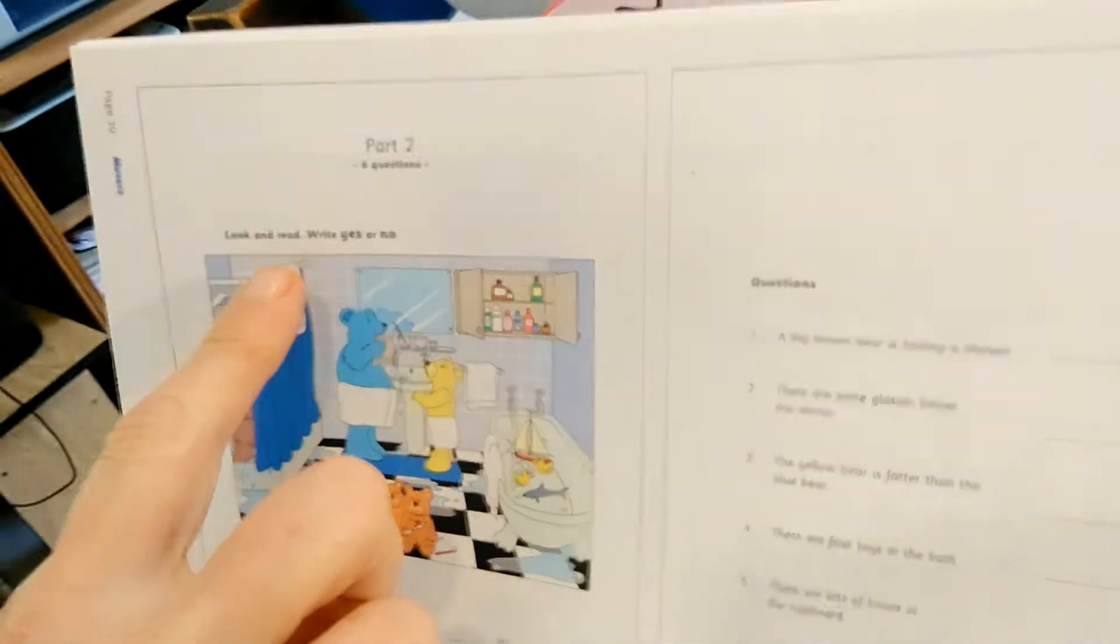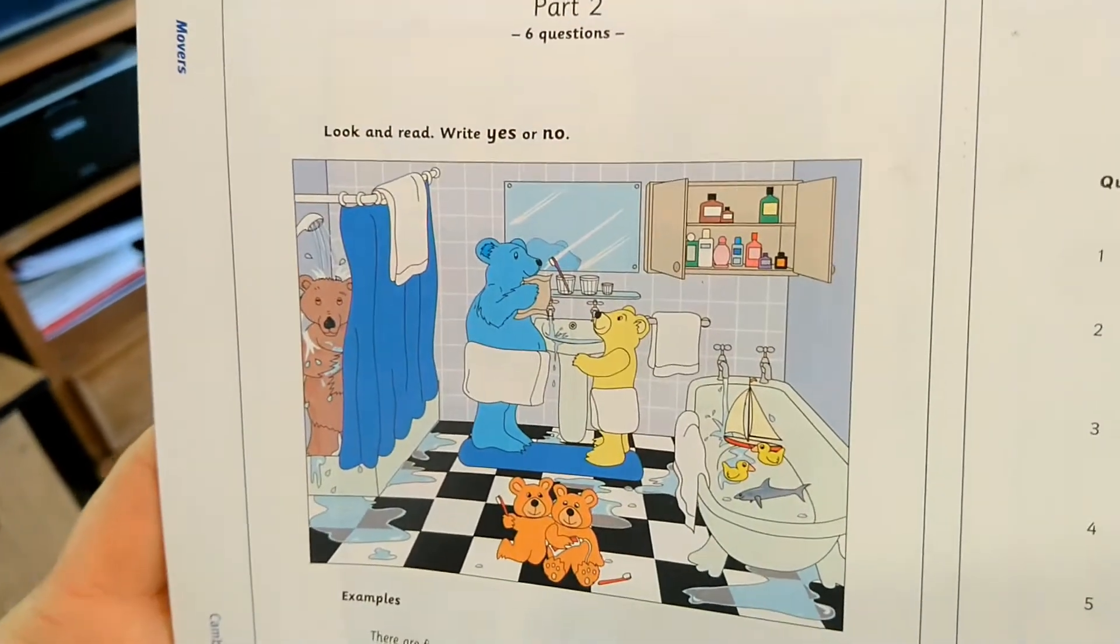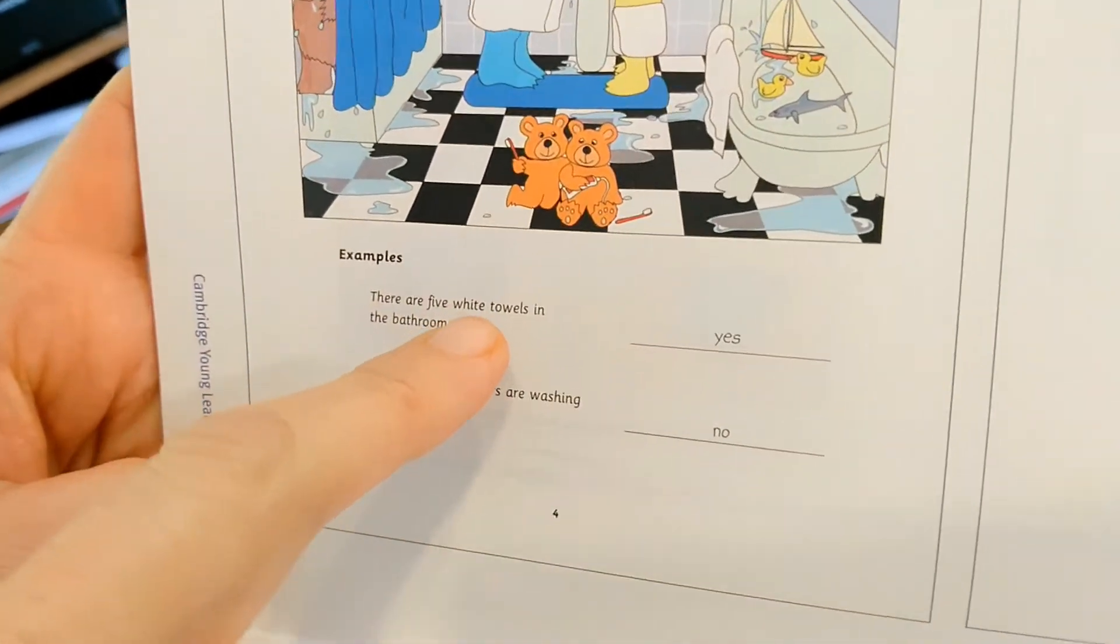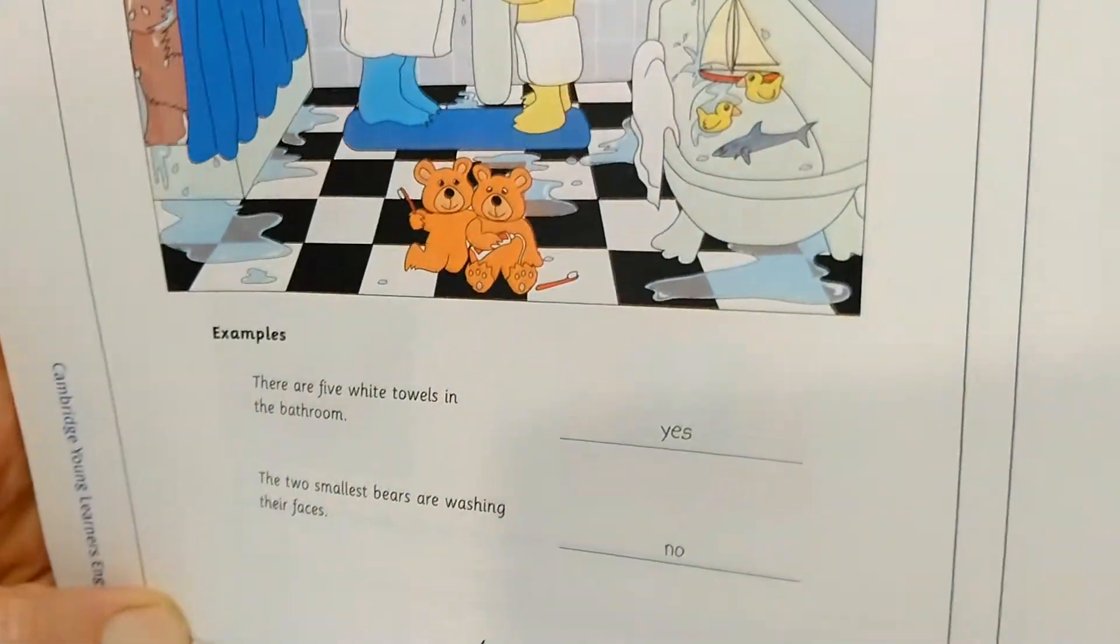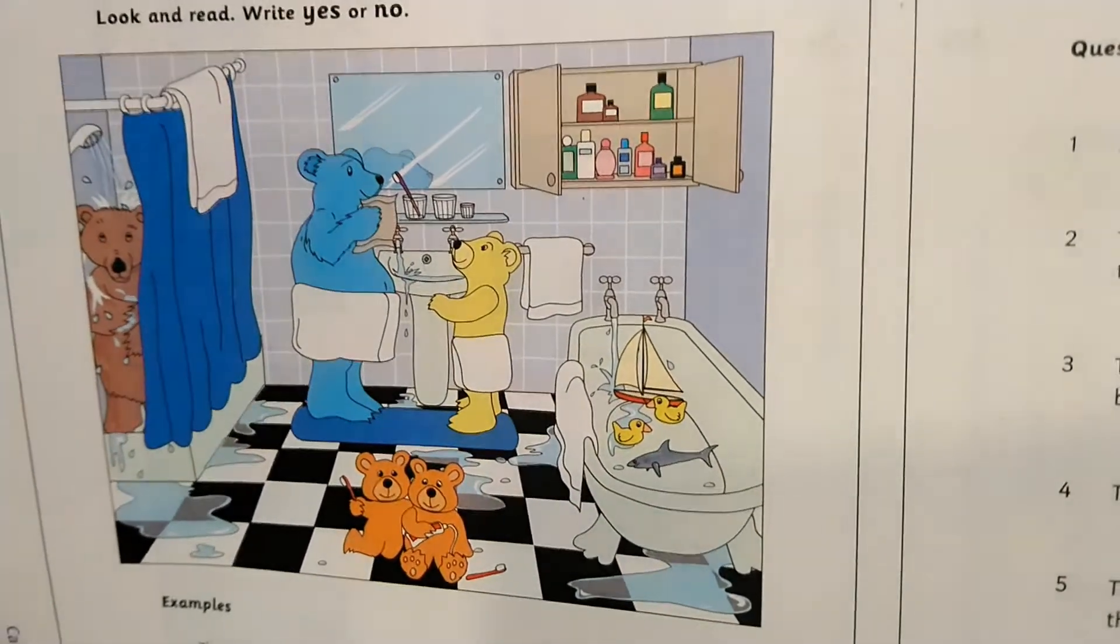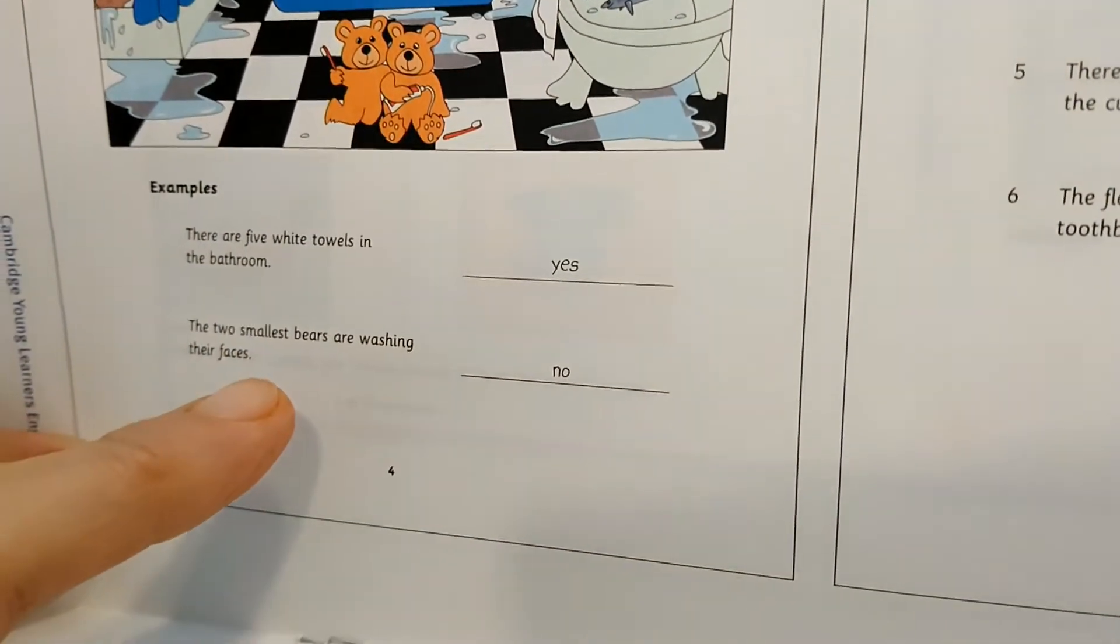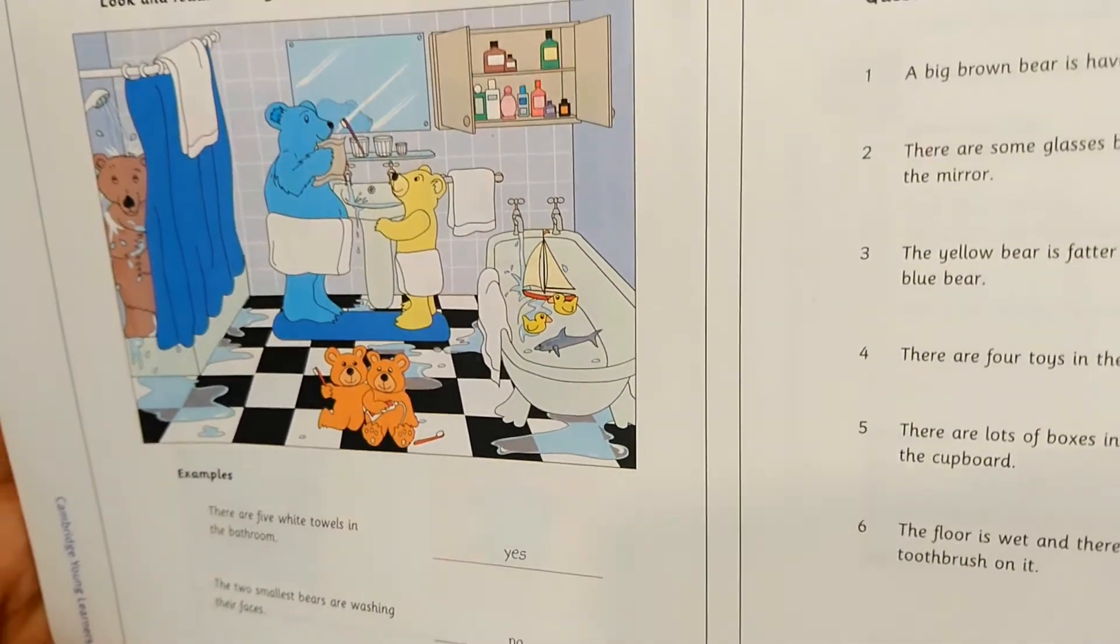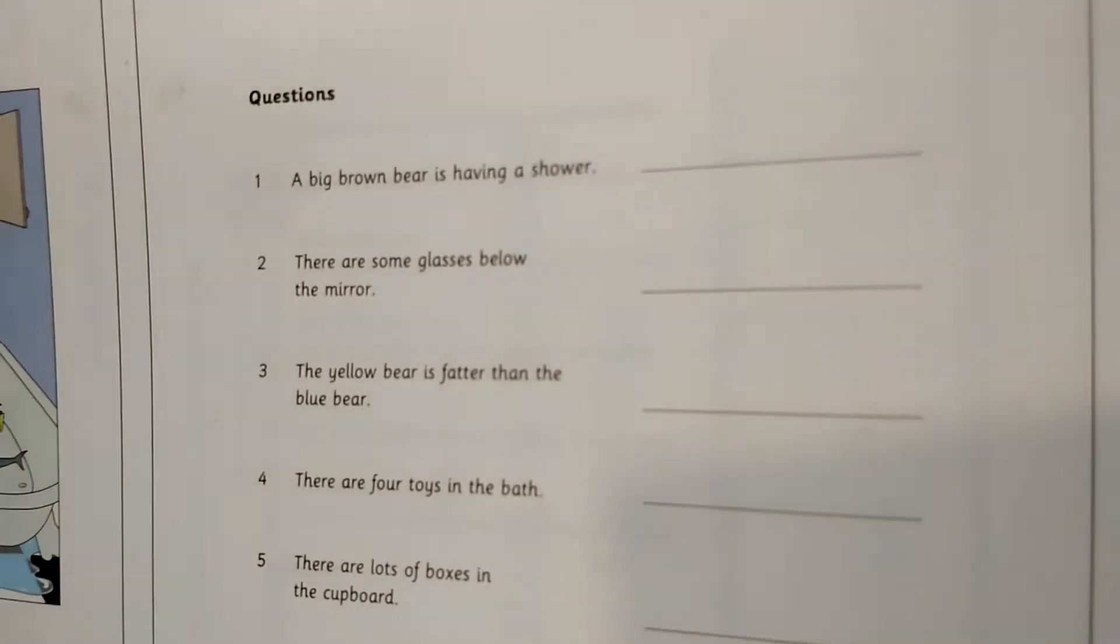Part two of this paper is look and read. Write only yes or no. So you have to complete. There are five white towels in the bedroom. You need to count them and make sure that there are five. Part two. The two smallest bears are washing their faces. You need to pay attention to the size of the bears. So again, you look, you read, and you only answer yes or no.